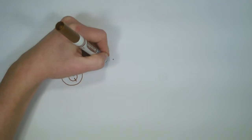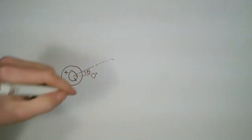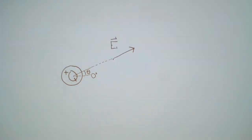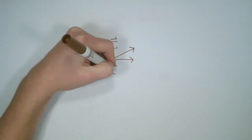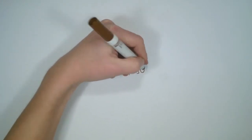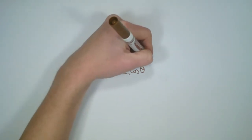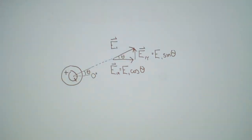Looking at E1, we replicate the diagram: E1 points out from the positive charge at angle theta. Because E1 points somewhere within a two-dimensional plane, we can break it into x and y components. The x component is the magnitude of E1 multiplied by the cosine of theta, and E1y is E1 multiplied by the sine of theta.